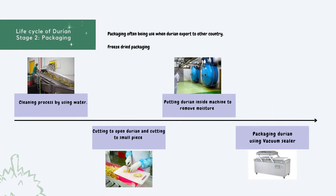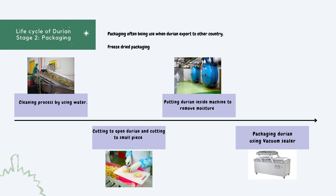The second stage is packaging. Packaging durian is often used when exporting durian to other countries. Freeze-dried packaging is the focus in this video. After the durian arrives in the packaging area, the cleaning process takes place using water to make sure there is no unwanted material involved. After that, cutting opens the durian and slices the flesh into small pieces. The next phase is putting the durian inside the machine to remove moisture. The last process is packaging using a vacuum sealer to prevent air inside the package.